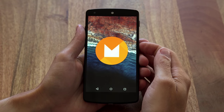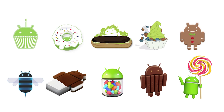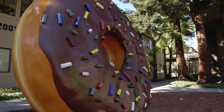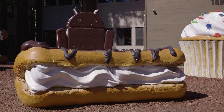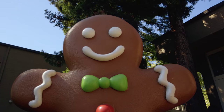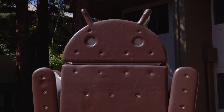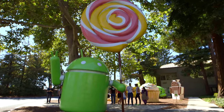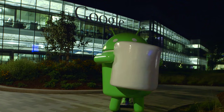Basically, every year we come out with a new version of the software that runs on your phones, and we give it a name. It's alphabetical, and thematically we decided we would go with tasty treats. It started with cupcake, then donut, eclair, froyo, gingerbread, honeycomb, ice cream sandwich, jellybean, KitKat, and lollipop. And now, marshmallow.